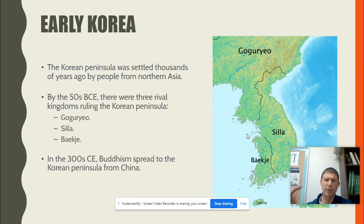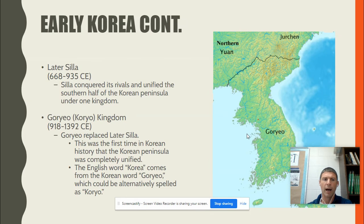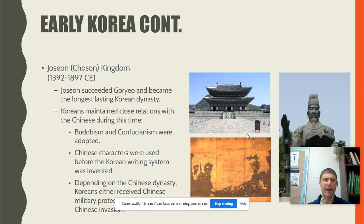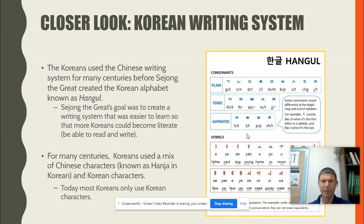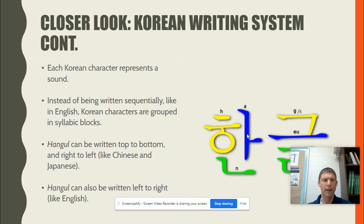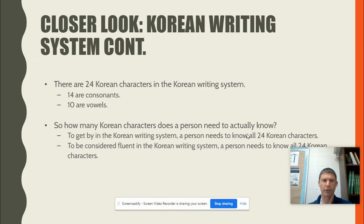Korea is interesting. We know of North and South Korea, but it hasn't always been that way. There were several different kingdoms that existed there for many, many years. Korea is obviously different from China — sometimes we think these areas are all connected, but there were separate belief systems and separate languages, though there were many influences from one to the other. The Korean writing system isn't nearly as complex as Chinese — it has about 24 characters.